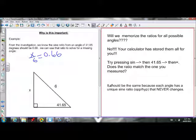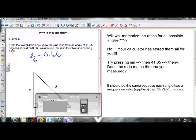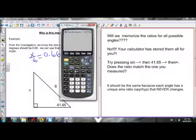Will we have to memorize the ratios for all the possible angles? We figured this one out, 0.66, by doing that GSP demonstration. Are we going to have to memorize all of these? No, your calculator has stored all of these for you. On your calculator, if you put in the sign of 41.65...